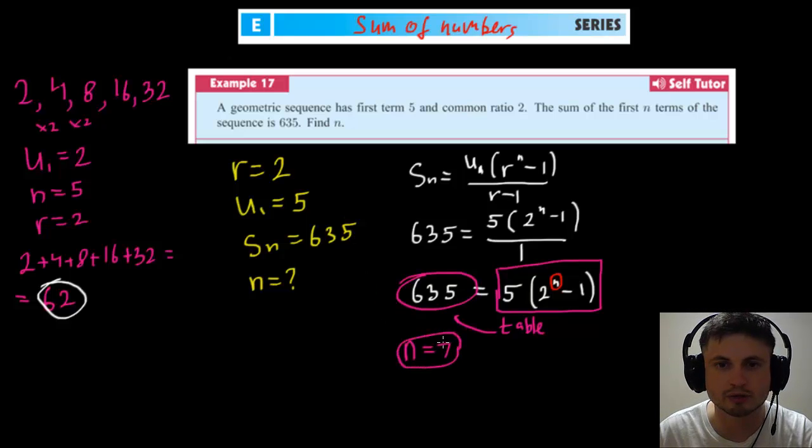We go into our Y and we type 5 times bracket 2 to the power of X and then minus 1 bracket. Enter and go into your table and scroll down until you find 635 right here and the value of X is 7 which means that our n is 7. And that's pretty much it. That's how you solve this problem using a combination of the expression that's given to you on your formula sheet and the GDC.